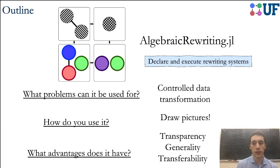And then what are some of the unique advantages of this approach? In short, the technique is a declarative language for transforming data in a very controlled way. It has a very intuitive interface for how you define the rewrite rules. And it has advantages of transparency, generality, and transferability.